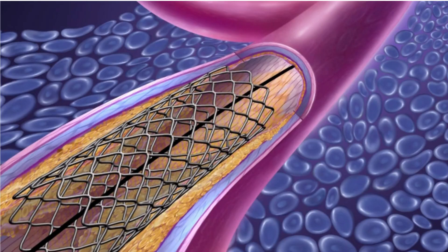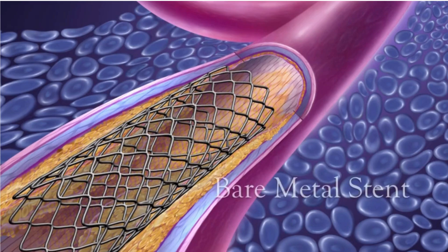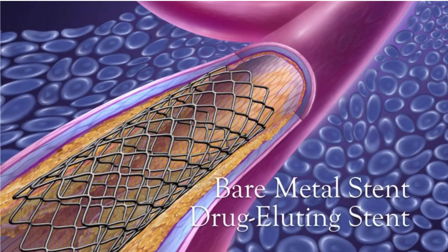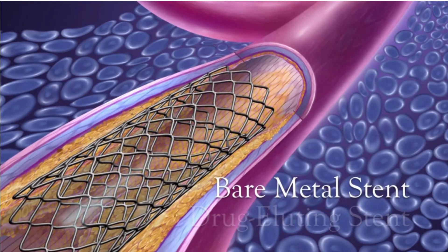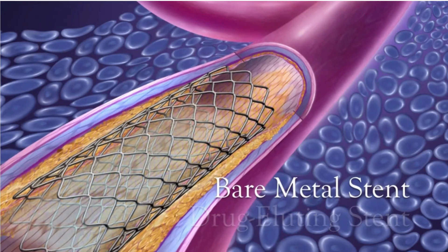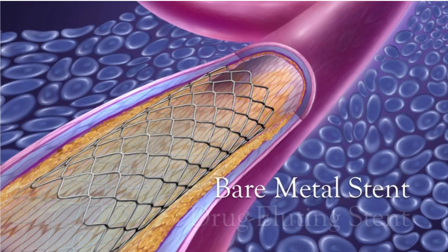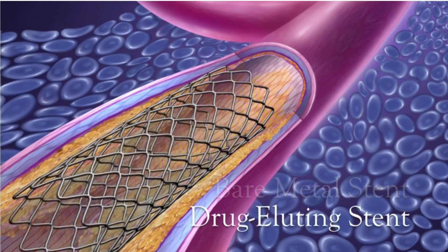There are different types of stents, including bare metal stents and drug-eluting stents. Bare metal stents are uncoated stents that provide structural support to keep the coronary artery open. While they are effective, there's a risk of restenosis, which is the re-narrowing of the artery.